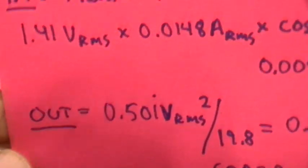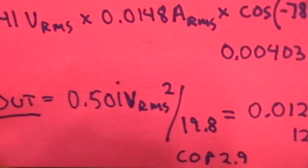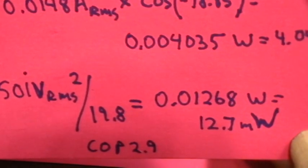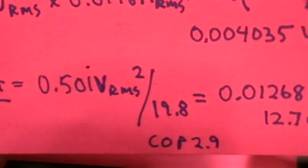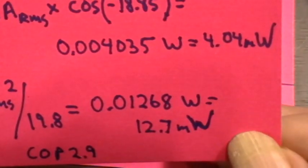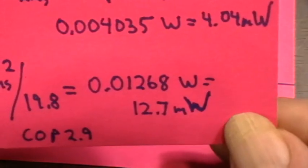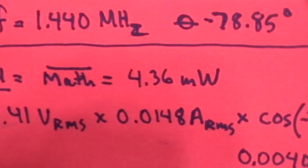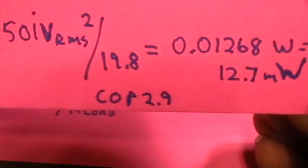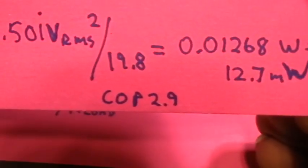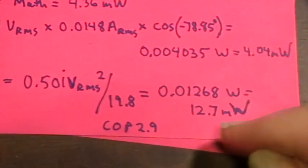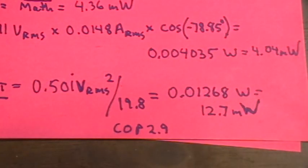Now the output power is the voltage squared, the RMS voltage squared across the load divided by the load. Okay, so we have 0.501 volts RMS, square that and then divide that by 19.8 ohms, and you come out with 0.01268 watts or 12.7 milliwatts. That's output power dissipated in the load resistors. Input power is 4.36 milliwatts, and that gives us a COP calculation of 2.9. And if I use the sine wave assumption, it becomes even greater than that.